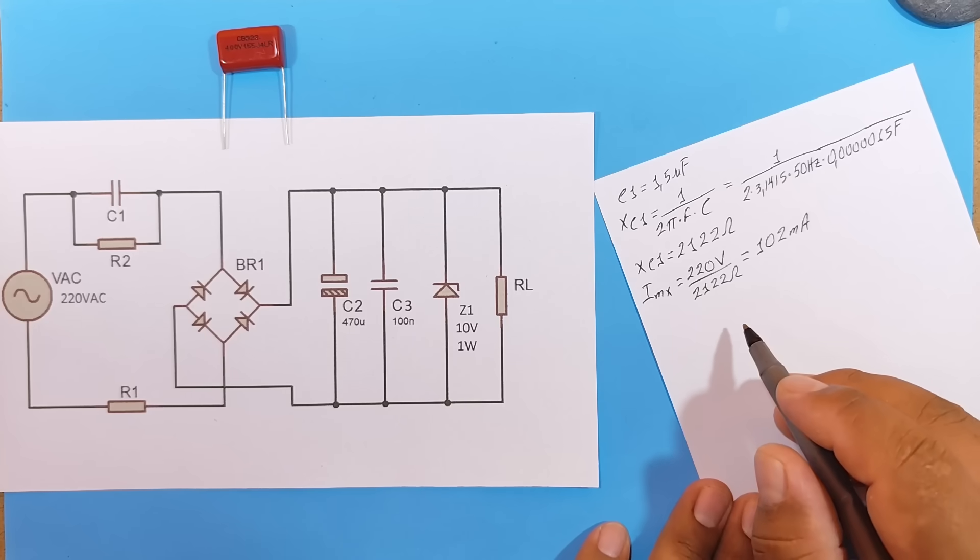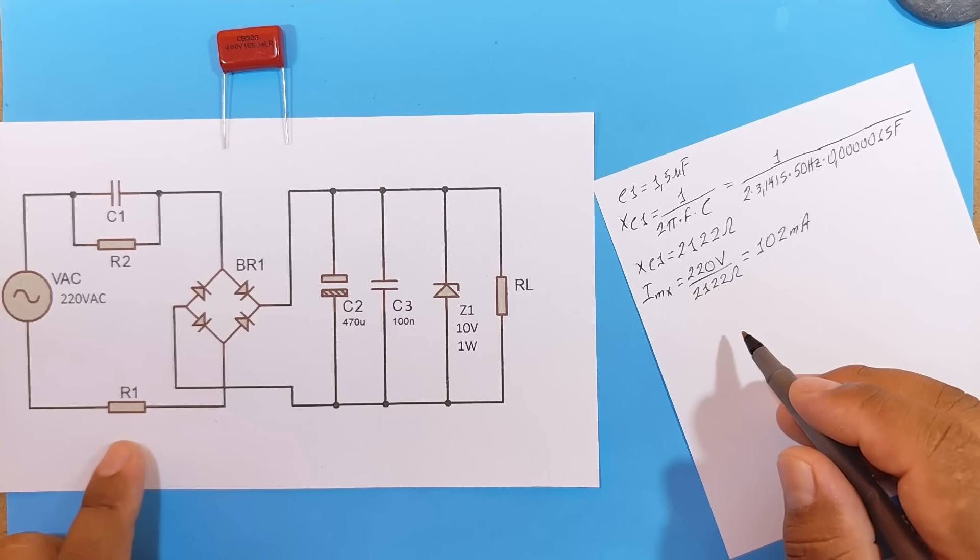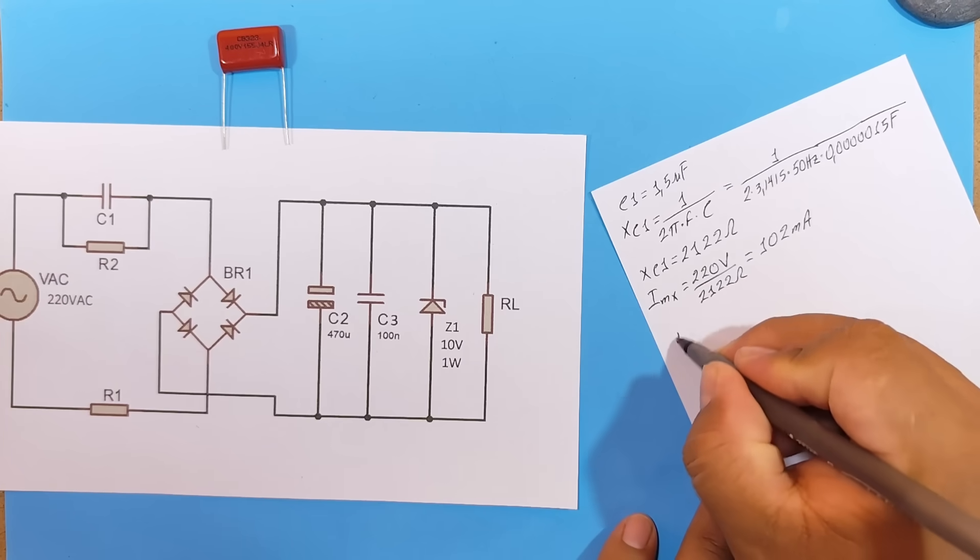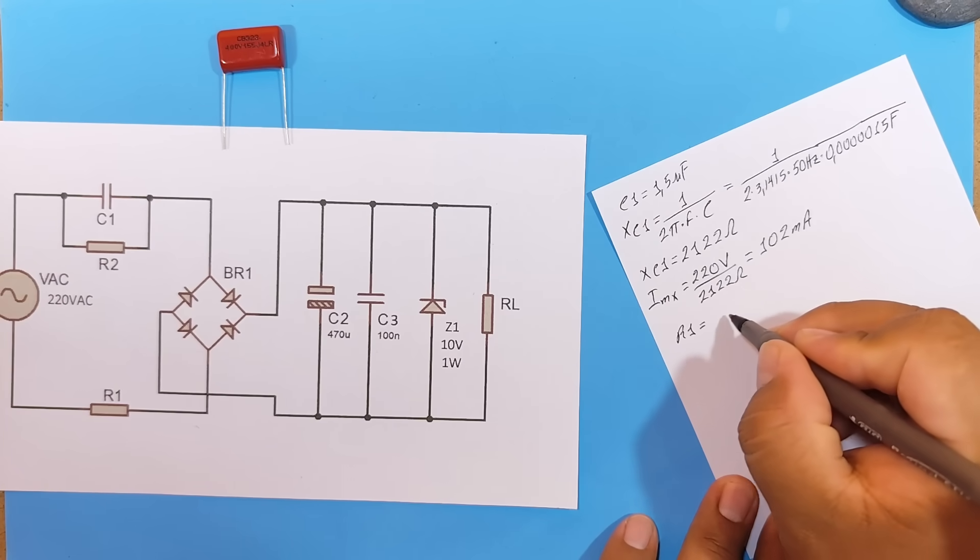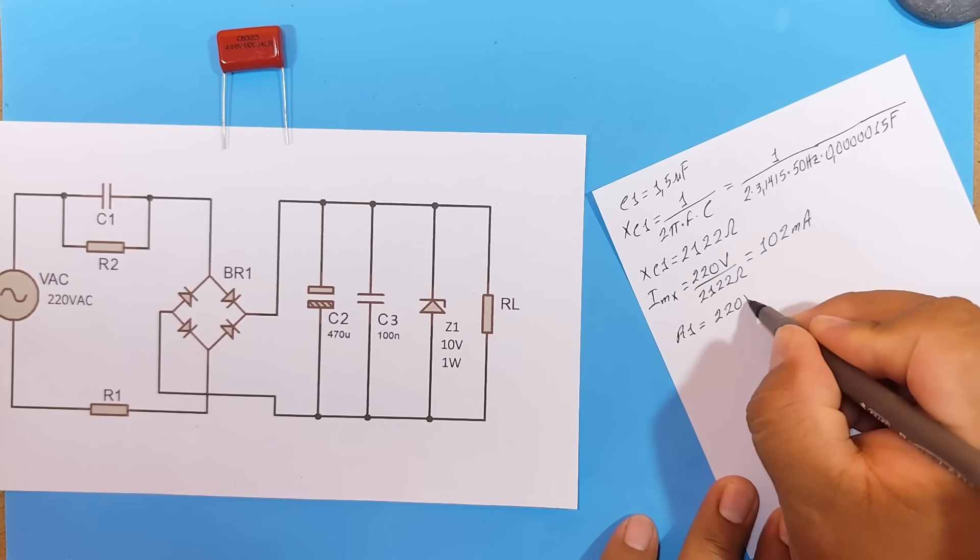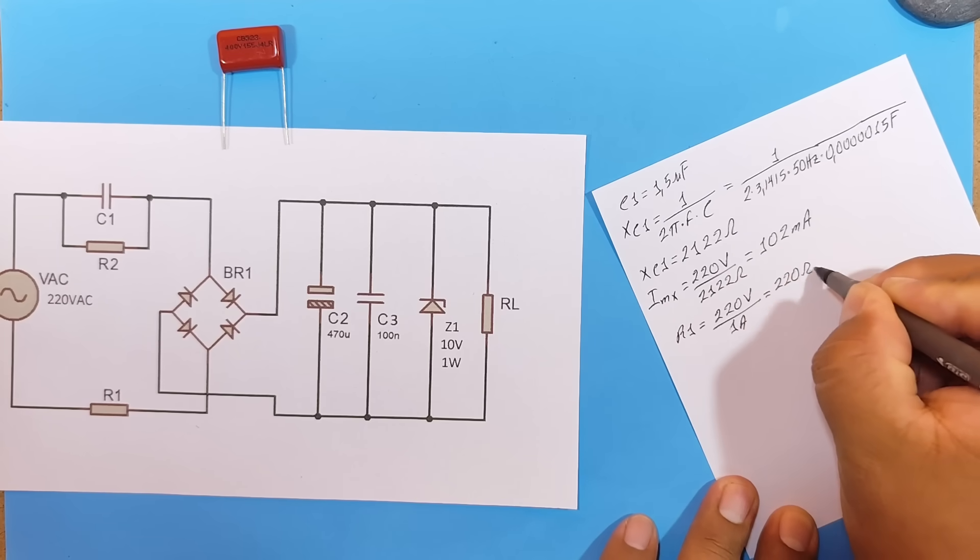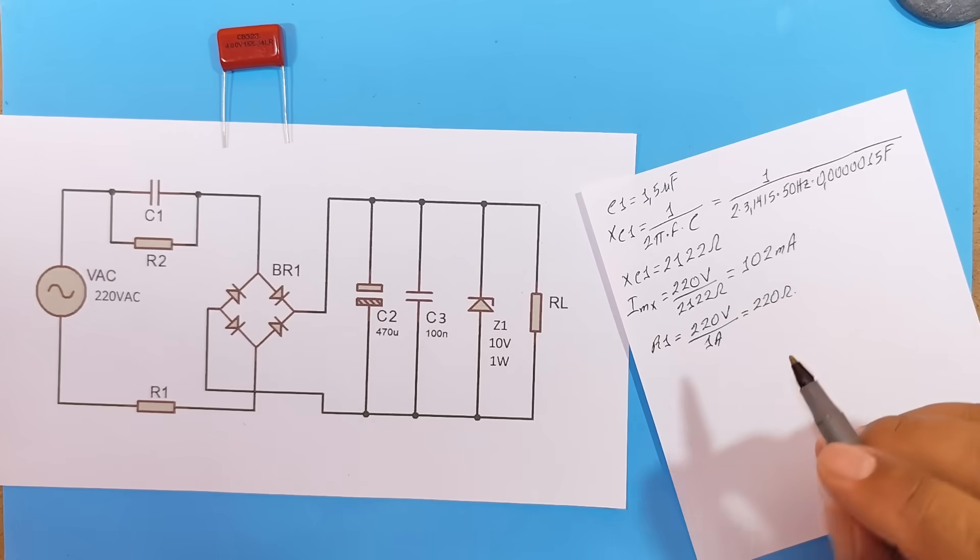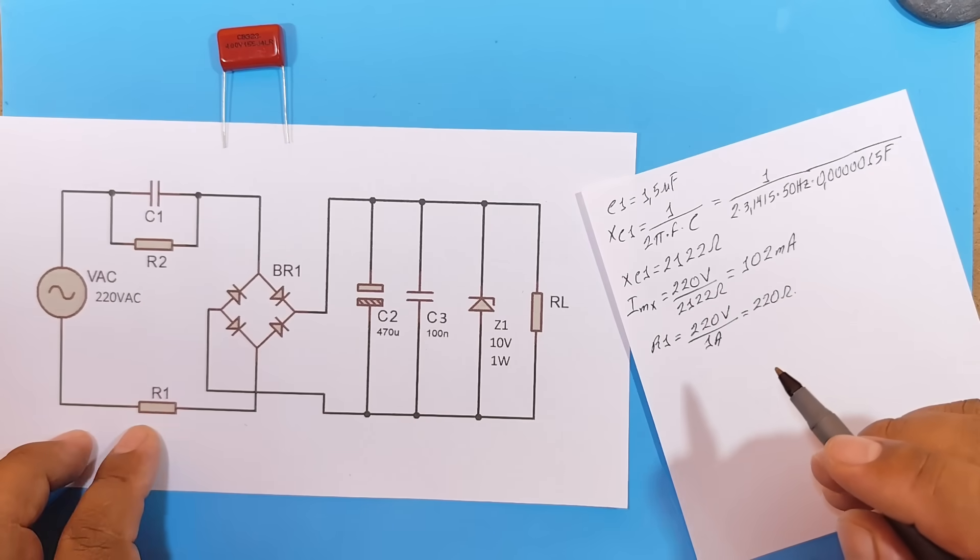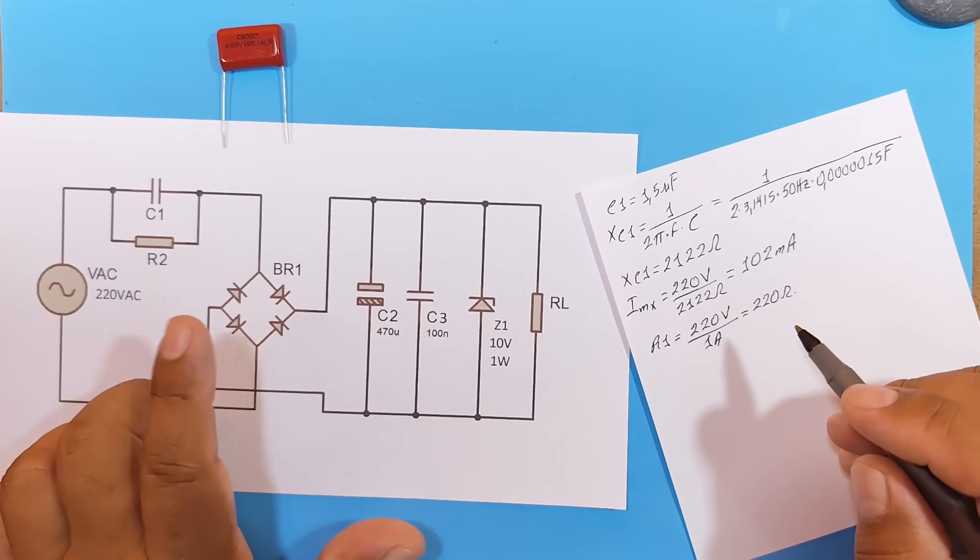Now, to calculate R1, we are going to use the following formula. R1 will be equal to 220 volts divided by 1 ampere. This will give us 220 ohms. Now, remember that R1 is a component that extends the lifespan of the diode bridge. That is, it limits the maximum current that passes through the diode bridge.